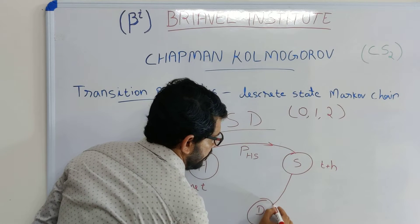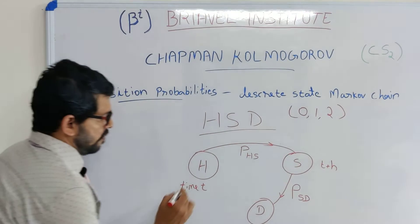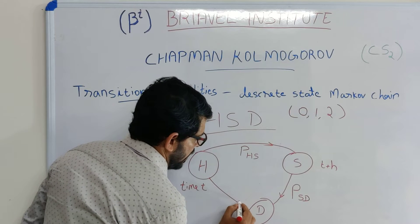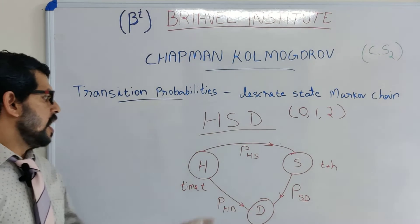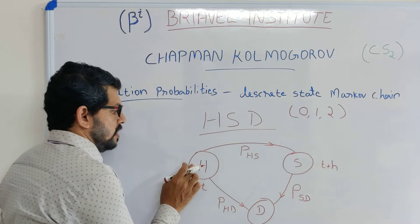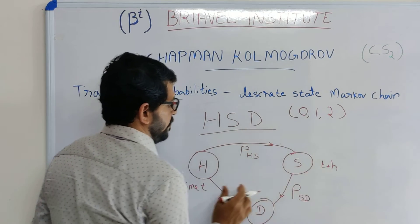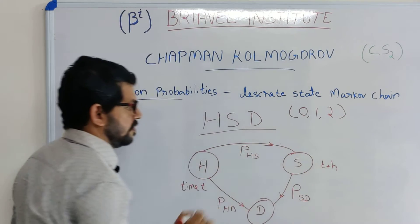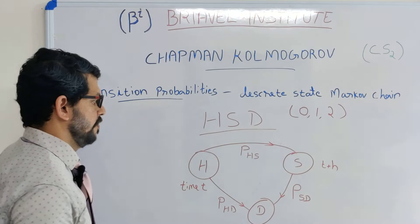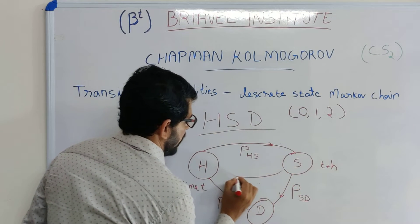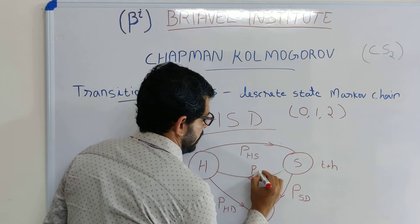There is also a chance of transitioning from sick to death, represented as probability p of SD. There is one more probability: directly from health to death, represented as p of HD, meaning a healthy person goes directly to death. Additionally, sick people may recover, giving a transition from S to H, represented as p of SH.